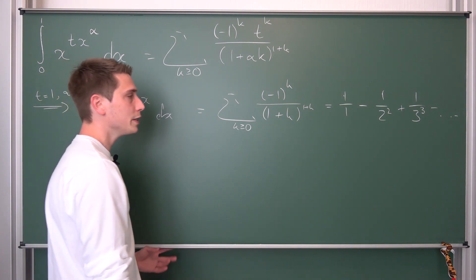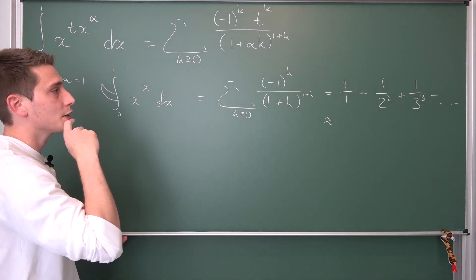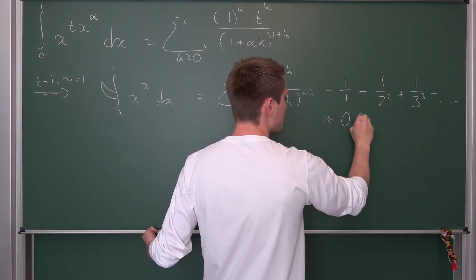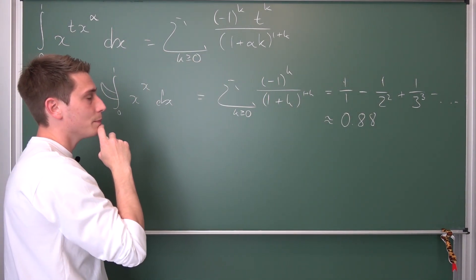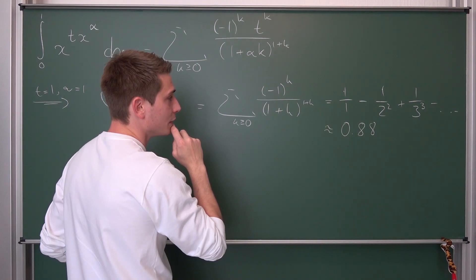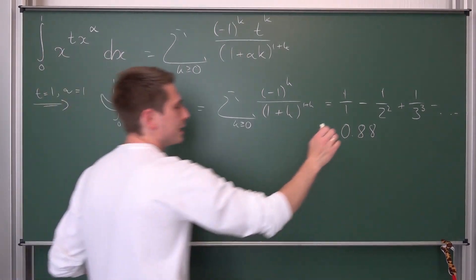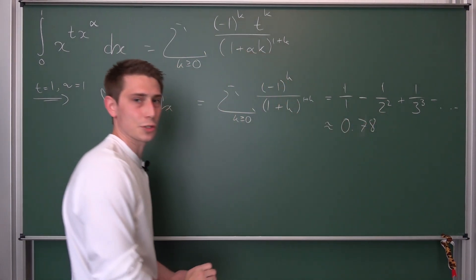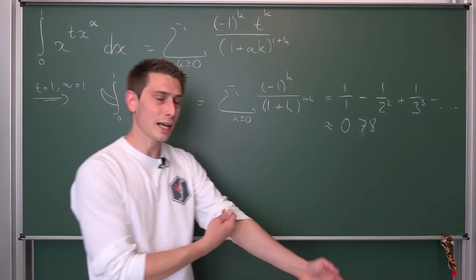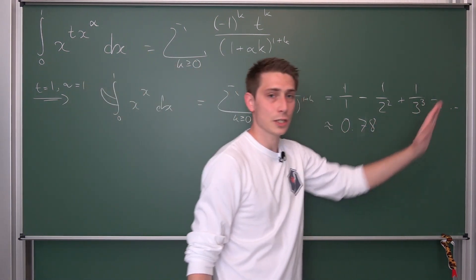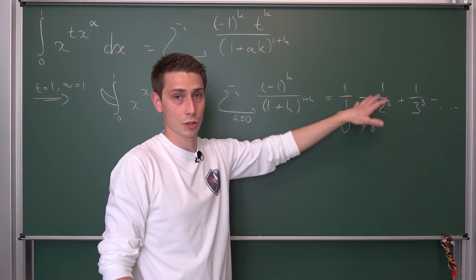1 over 3 to the third power negative blah blah blah up until infinity. This is what they actually look like. And like I said, you can cut the series off at this point already and you are going to be really close to the real result. The real result, I hope I'm not wrong on this one, should be something like 0.78. 2 squared is going to be 1 quarter. Yeah, it's going to be 0.78. I hope I'm right on this one. It should be. It's really close to this one.